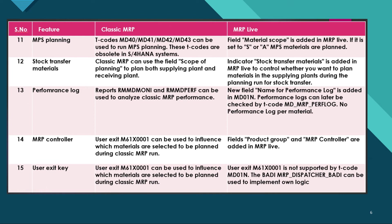For stock transfer materials: classic MRP can use the 'scope of planning' field to plan both supplying plant and receiving plant. In MRP Live, the indicator 'stock transfer materials' is added to control whether you want to plan materials in the supplying plant during the planning run.